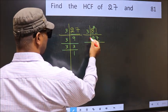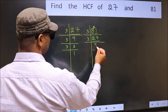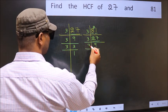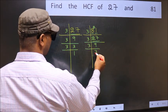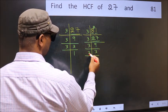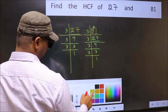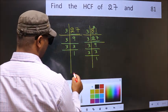Now 27 is 3 nines — 3 times 9 is 27. 9 is 3 times 3, which is 9. 3 is a prime number, so 3 times 1 is 3.